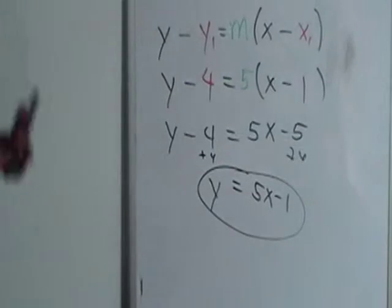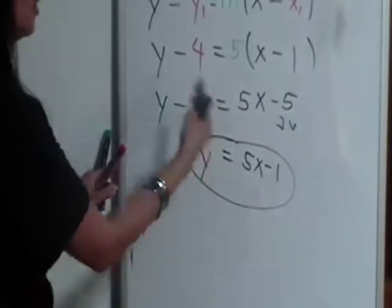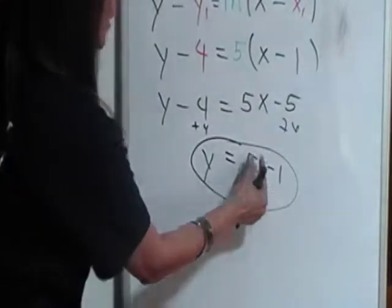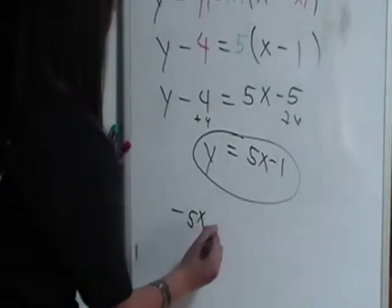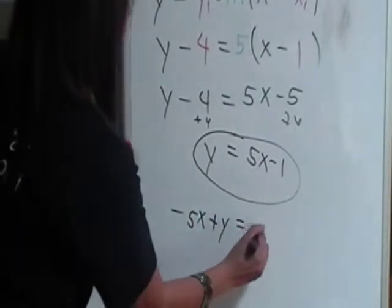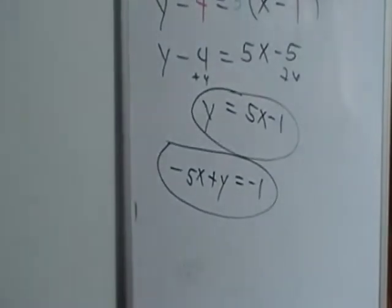Now if we're asked to produce the standard form, which means the x and the y will be together on one side, we can move 5x to the left by subtracting 5x from both sides and get negative 5x plus y equals negative 1. So this is our standard form of the equation of the line.